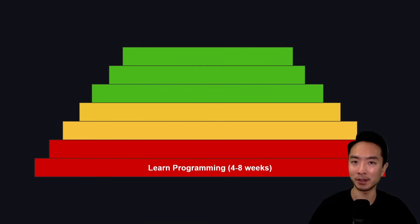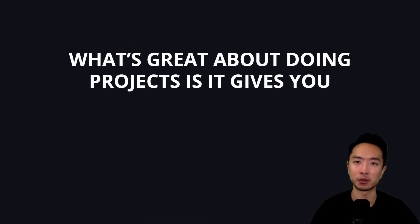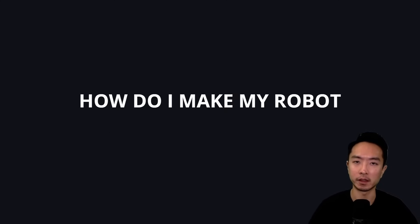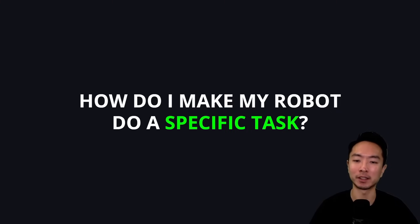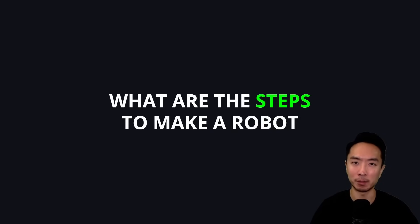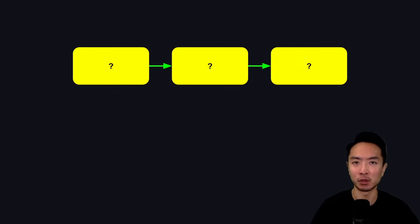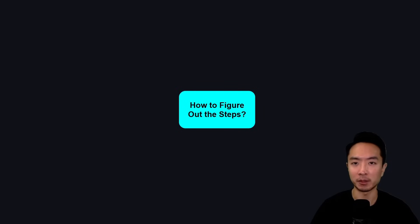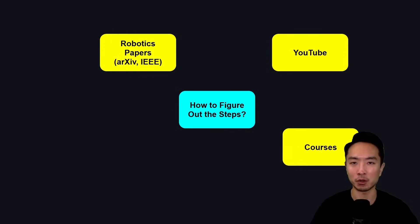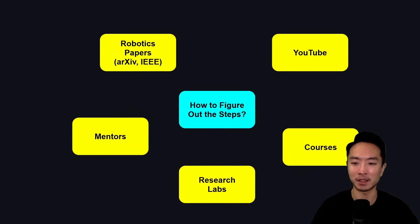Now that you have a programming background, the next step is to start a robot project. You should spend about eight weeks here. What's great about doing projects is you get exposure to many areas and get to apply what you learn. The question you can start asking now is: how do I make my robot do a specific task? Let's say you want your robot to do pick and place. You might not know all the steps at first, so resources like arXiv and IEEE papers, YouTube, courses, research labs, and mentors can help you figure them out.